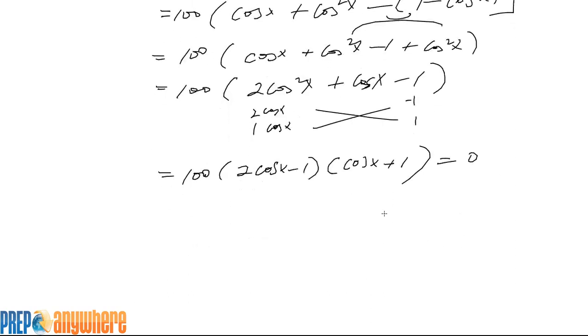Set that equal to 0. From here we get cosine of x equals one half, and from there cosine of x equals negative 1.